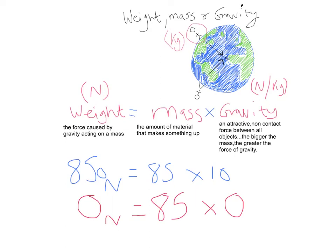So, that is the difference in this video between weight, mass and gravity. Mass is the amount of material that makes something up. Gravity is the force, non-contact force between all objects, pulling everything down to the centre of the Earth, essentially in this context. And weight is the force caused by gravity acting on that mass. Thanks for listening!